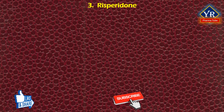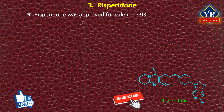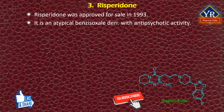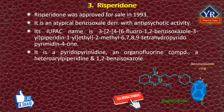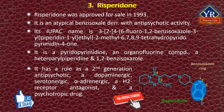The last drug of this lesson is risperidone. Study of risperidone began in the late 1980s and it was approved for sale in the US in 1993. It is an atypical benzisoxazole derivative with antipsychotic activity. Its IUPAC name is 3-[2-[4-(6-fluoro-1,2-benzoxazol-3-yl)piperidin-1-yl]ethyl]-2-methyl-6,7,8,9-tetrahydropyrido[1,2-a]pyrimidin-4-one. It is a member of pyridopyrimidines, an organofluorine compound, a heteroaryl-piperidine, and a member of 1,2-benzoxazoles. It has a role as a second-generation antipsychotic, a dopaminergic, serotonergic, alpha-adrenergic, and histamine receptor antagonist, and a psychotropic drug.